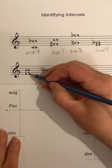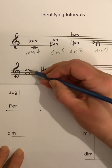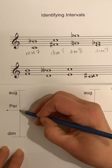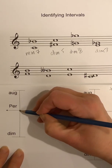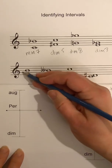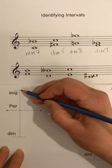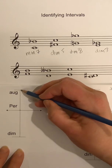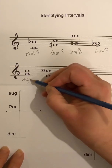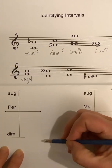F major has a B-flat — if it were perfect, that would be a perfect fourth. But this is a B-natural, and they don't need to put the natural since there's no key signature. It's been raised, so it's an augmented fourth.